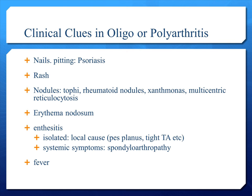There are some clinical clues in patients with oligo or polyarticular joint involvement. Such as pitting of the nails — we will have to think of psoriasis. And if they have photosensitivity or rash, you want to think of systemic lupus erythematosus. Those patients with nodules — think of tophi, rheumatoid nodules, xanthomas, multicentric reticulohistiocytosis, erythema nodosum — you think of Crohn's disease. In patients with spondyloarthritis, enthesitis is a clue to spondyloarthropathy. As well as those with fever, you will have to think of systemic involvement or infection.